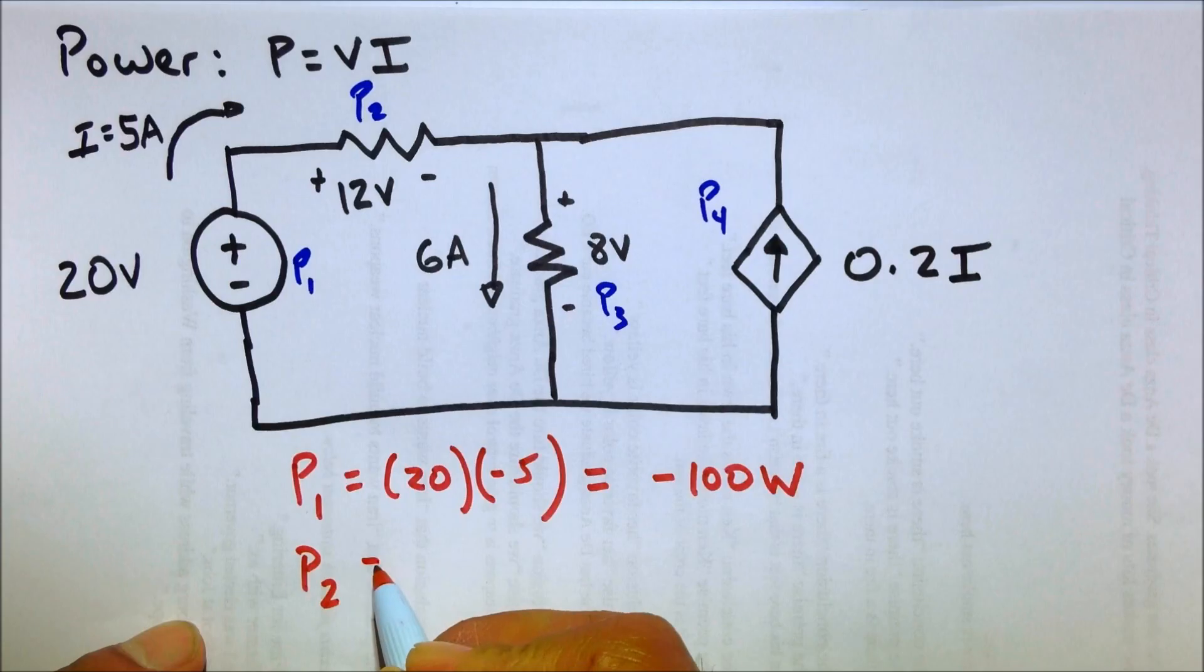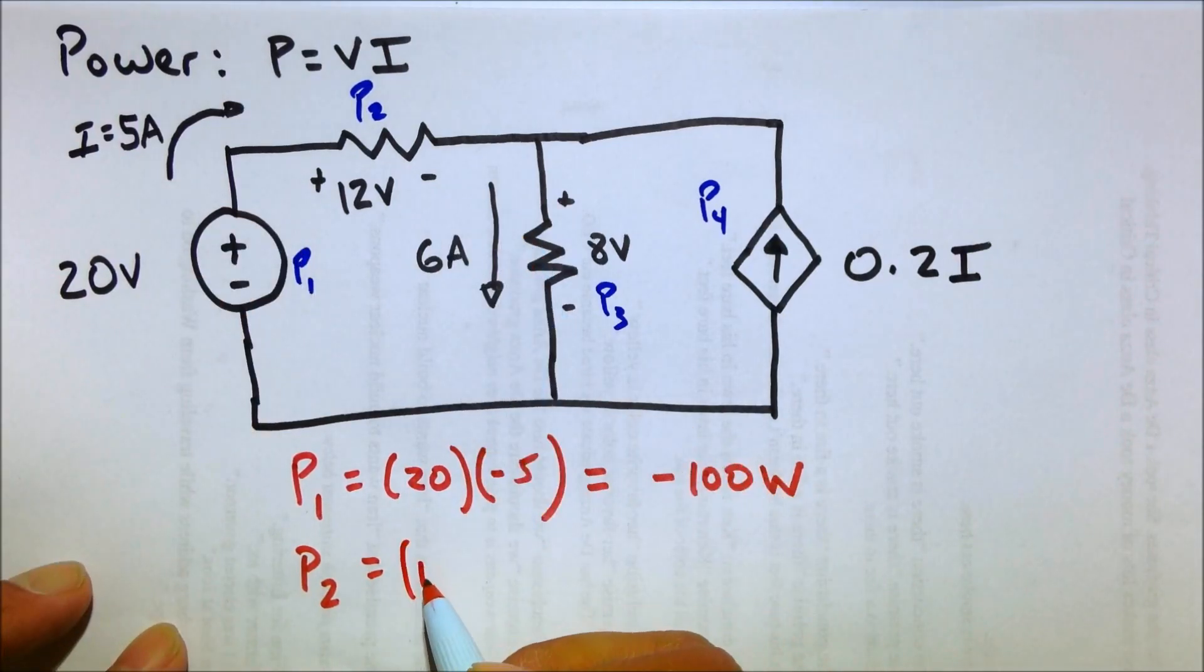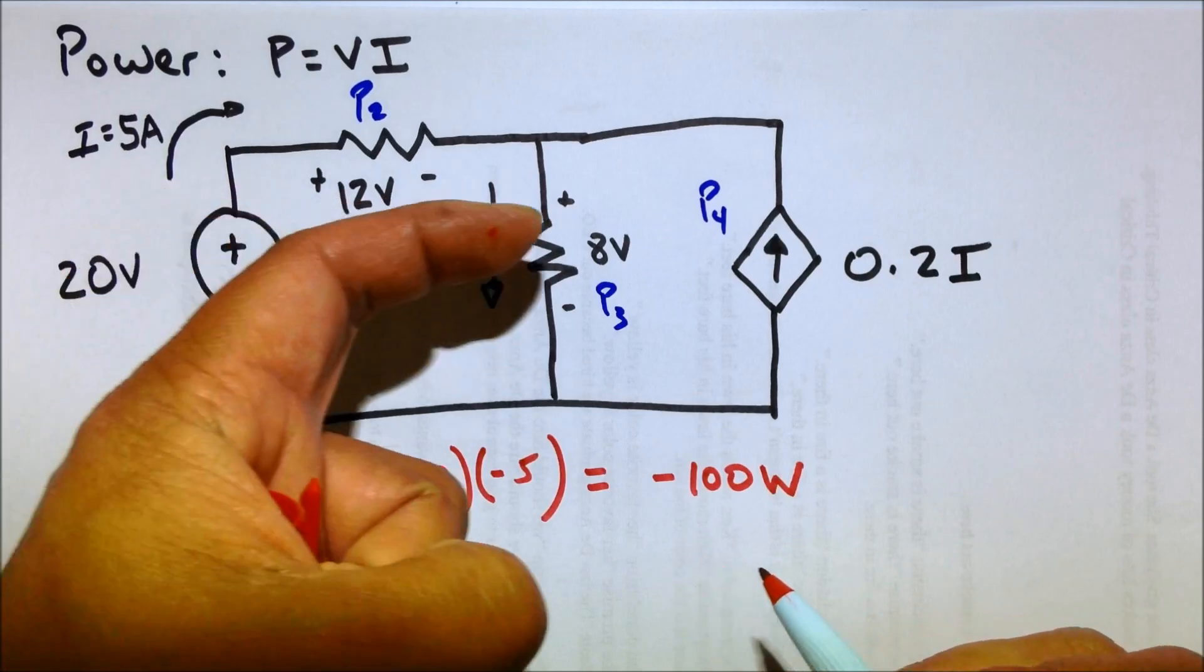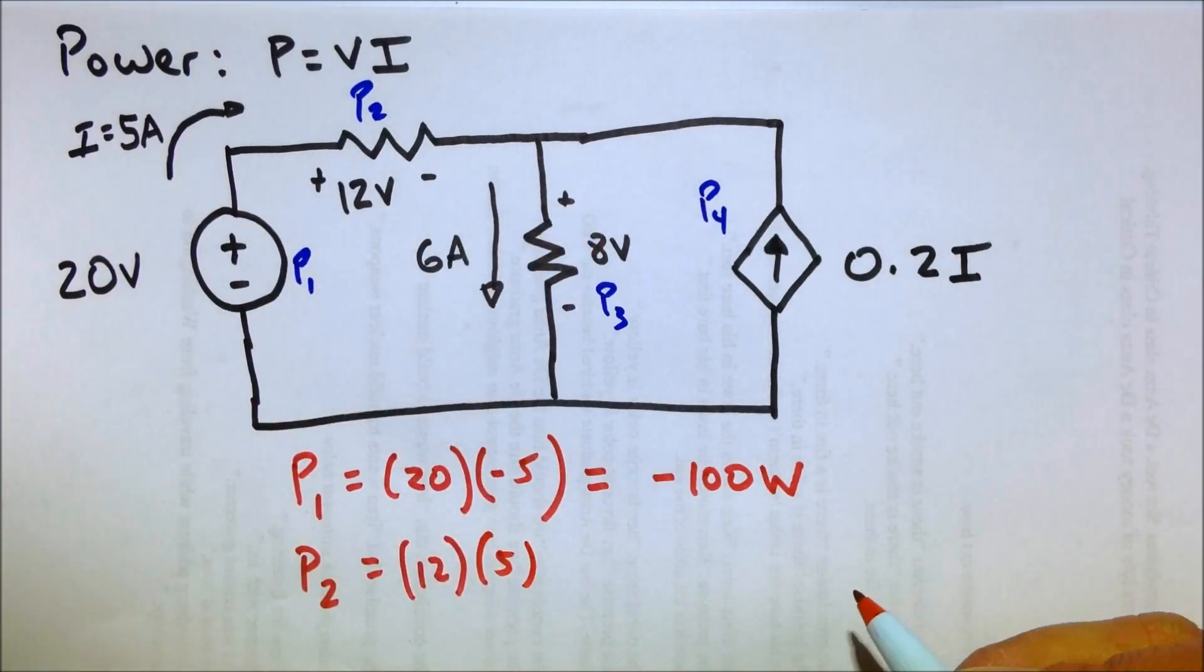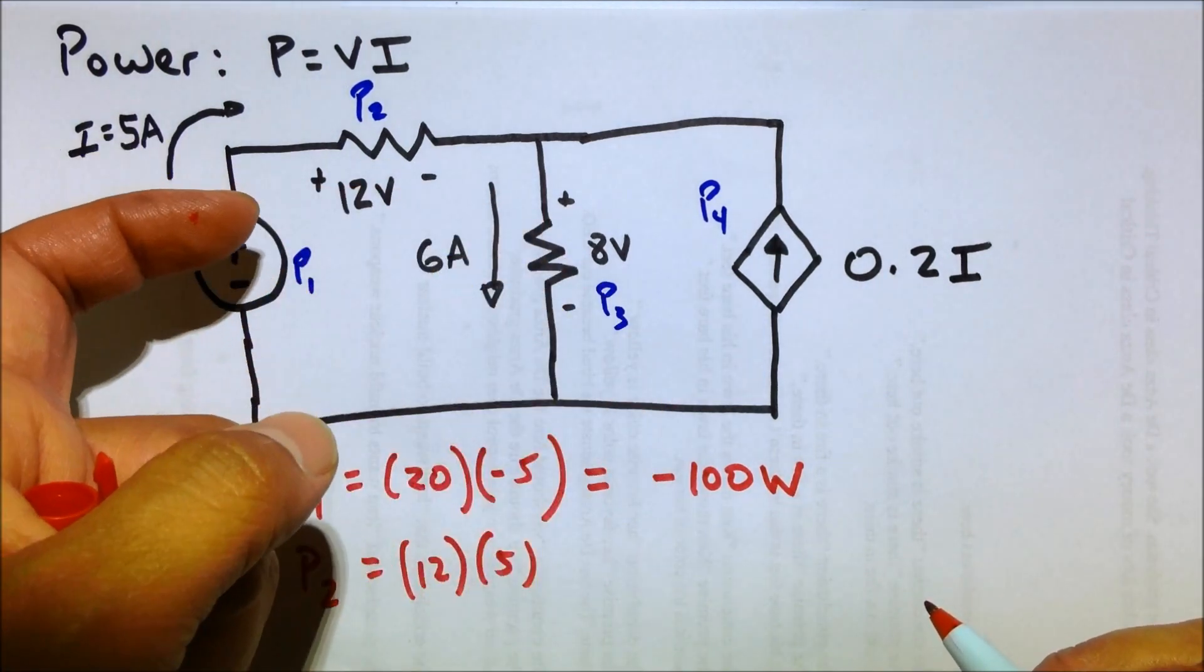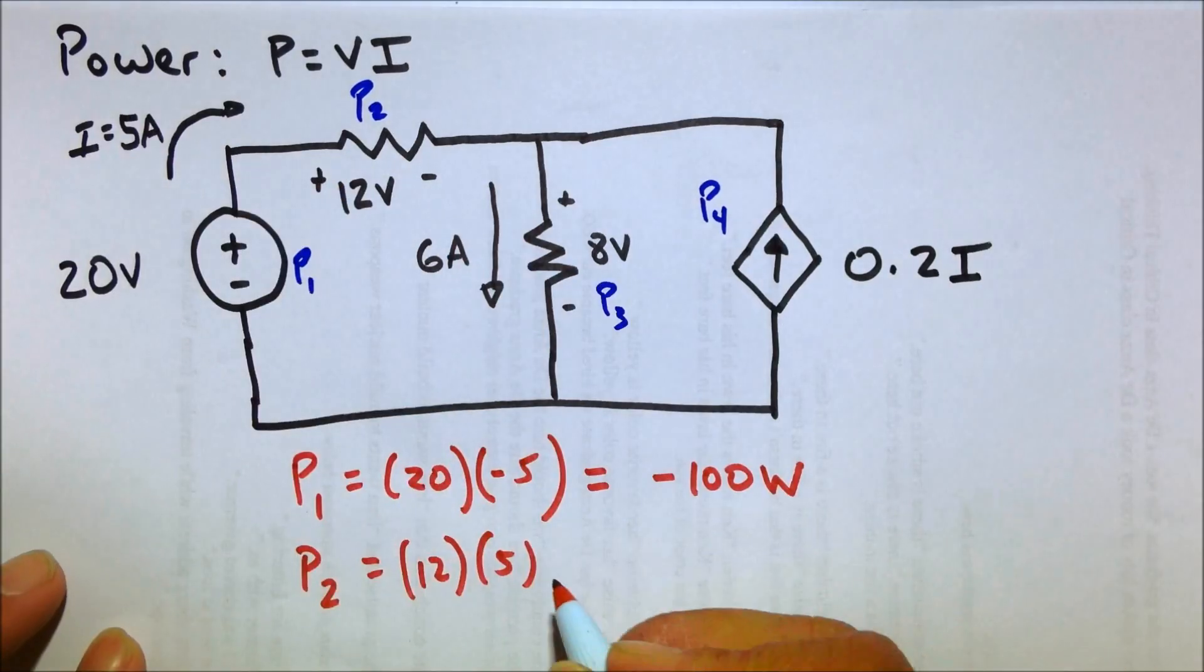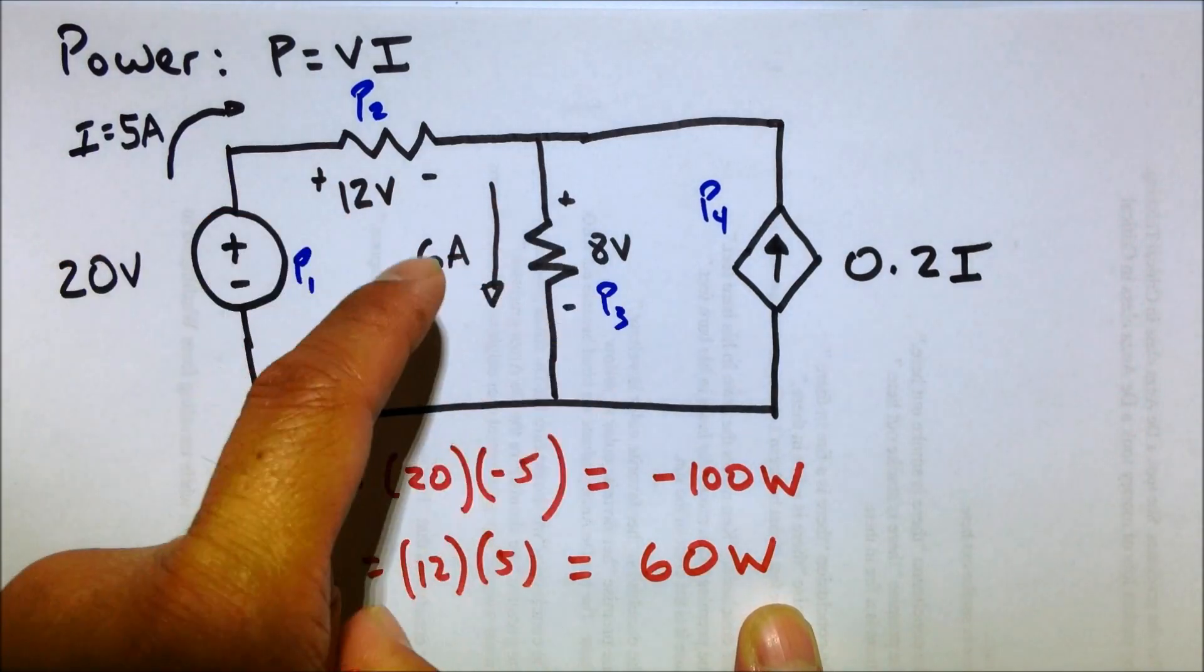So for instance, for P2, the voltage across that resistor is 12 volts. And the current going through there is 5 amps. And we're going to say positive 5, because it's flowing in the direction we think it's going to flow, from the highest potential to the lower potential. That gives us 60 watts. So this is 60 watts consumed or absorbed by that guy.